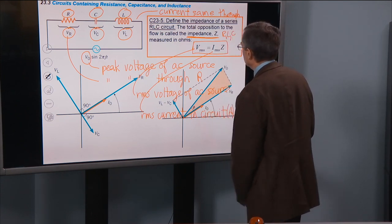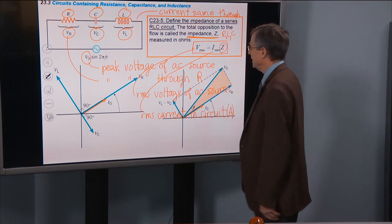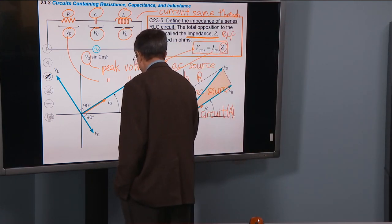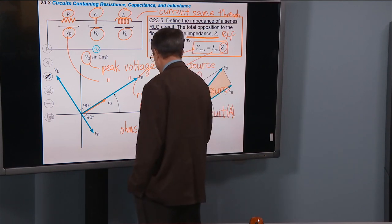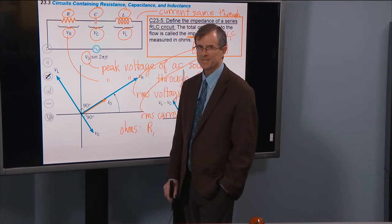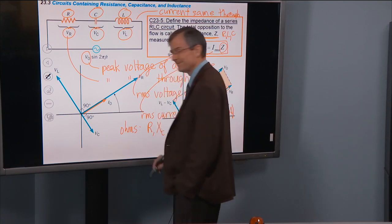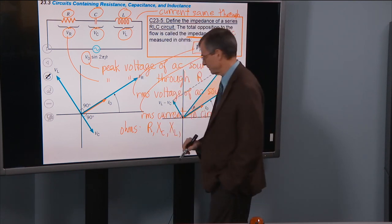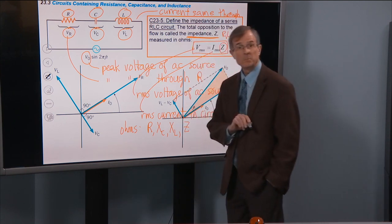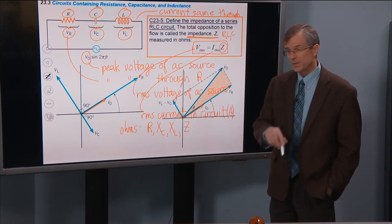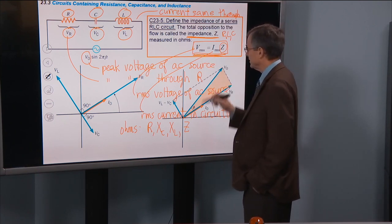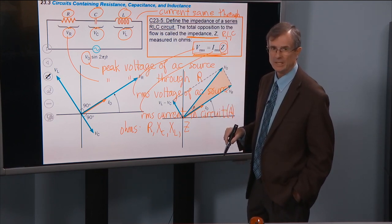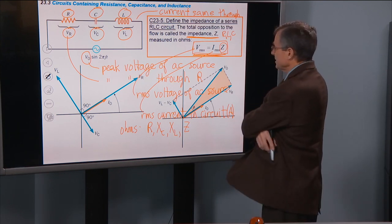Z is the impedance, measured in ohms. What other things are measured in ohms? Resistance, capacitive reactance, inductive reactance—and now impedance. How do we know it's measured in ohms? Because it looks just like V = IR. If we've got voltage and current, whatever's left has to be in ohms. That's the definition of impedance.